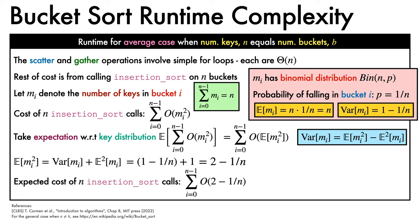So we see that the expected cost of the n calls to insertion sort is the sum over n terms of big O of 2 minus 1 over n, which is big O of n. Combining this with the scatter and gather costs, we can see that the runtime for the average case of bucket sort is big theta of n.